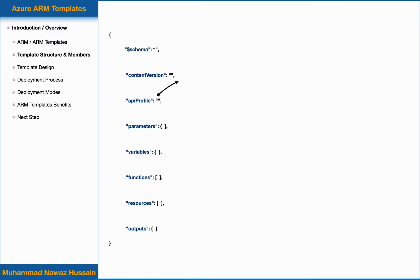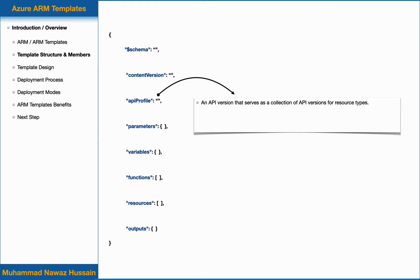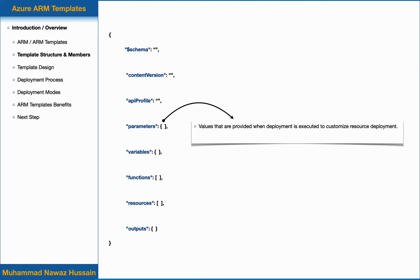The next member is API profile. An API profile is an API version that serves as a collection of API versions for resource types. If you have more than one resource in your ARM template, instead of adding an API version on each resource individually, you can declare that version at the top level. Use this value to avoid having to specify API versions for each resource — it is an optional member. Next we have parameters, which are values provided when deployment is executed to customize resource deployment, for example for dev or production environments — also optional.